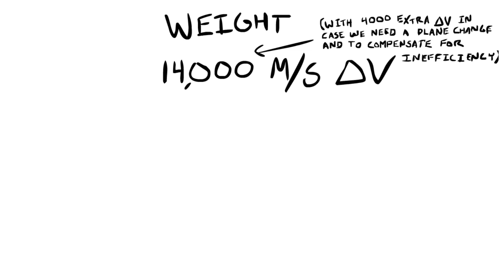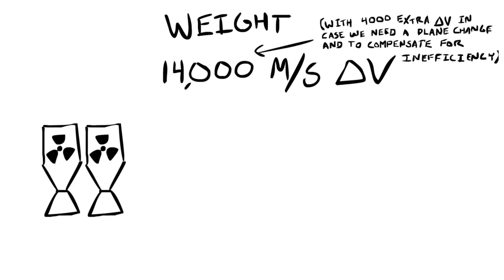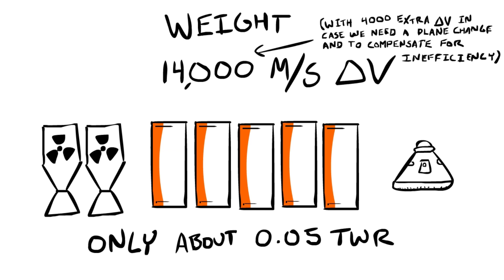That's two nuclear engines, five orange fuel tanks, and one capsule for the crew to travel in. That leaves us with only about 0.05 in our thrust-to-weight ratio, which is slow. But we can use the Oberth effect to make things more efficient as we're leaving Kerbin. Once we get out, we have no problem just leaving it there burning.